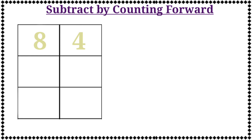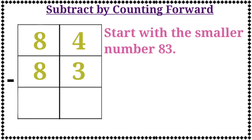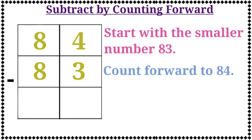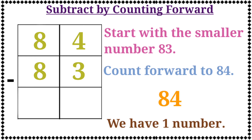The next example is 84 minus 83. Start with the smaller number 83, then count forward to 84. Let's count: 83, then 84. Now we have one number. Therefore, the answer is 84 minus 83 is equal to 1. Let's write the number 1 in the box.